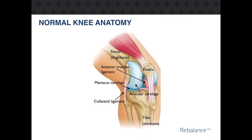The knee is a complex hinge joint that allows you to bend or straighten your leg. The knee joint is comprised of the bottom end of the femur and the top end of the tibia. When you move your lower leg, your femoral condyles glide over the tibial plateau, aided by a cushioning layer of cartilage. In a healthy knee joint, this motion is smooth and painless.